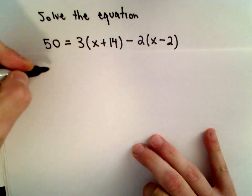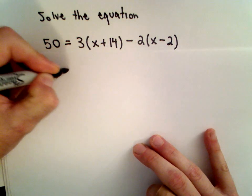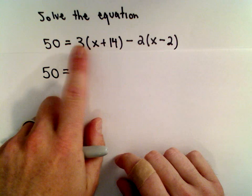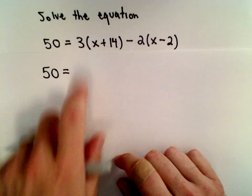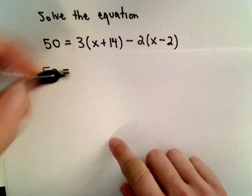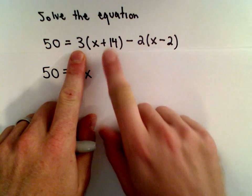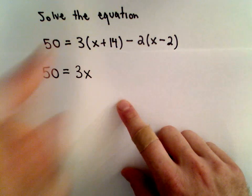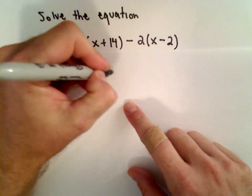Okay, so we've got 50 equals, and again, the distributive property says whatever number you have out front, you multiply to each term inside the parentheses. So we'll multiply 3 times x, that'll give us 3x. We have positive 3 times positive 14, that's going to give us positive 42.